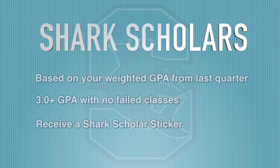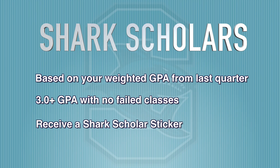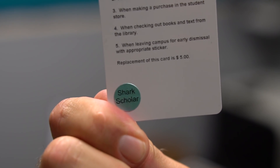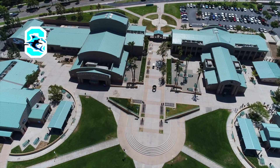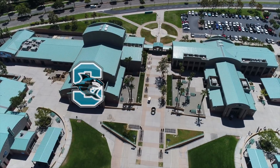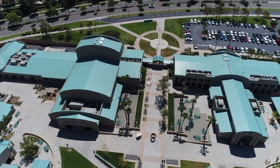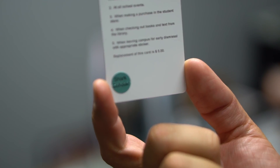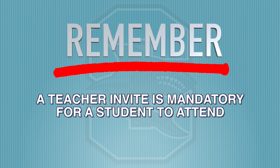This honor is based on your weighted quarter GPA. If you receive a GPA above 3.0 and did not fail any classes, you will be eligible to receive a Shark Scholar sticker for your ID that grants you access to enrichment areas such as the library, the Shark Tank, and possibly the theater when we have presentations available, and our computer labs. You must have both your ID with a Shark Scholar sticker on it to gain access to these enrichment spaces. If any student, including a Shark Scholar, is invited by a teacher, they must attend that teacher's Office Hours.